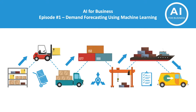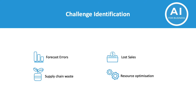The topic for today is demand forecasting using machine learning. Let's start with the current challenges involved with demand forecasting. There are various challenges depending on the application or industry. Today I want to highlight four key challenges. The first one is forecasting errors, which includes financial forecasting.